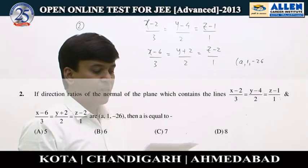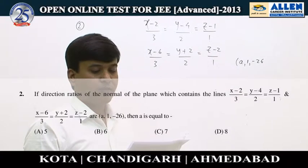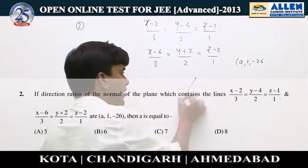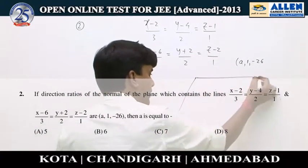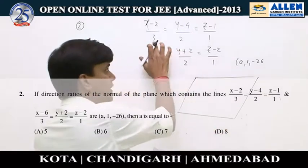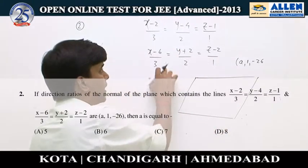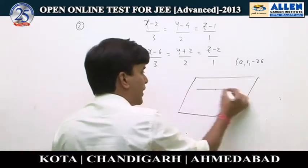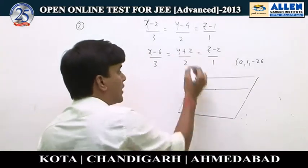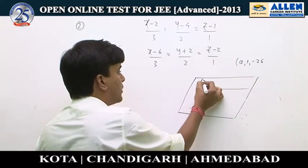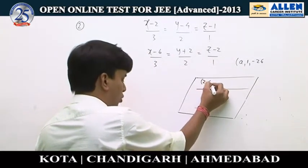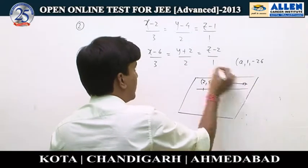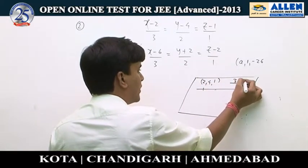We have to find out the direction ratios of the normal of the plane which contains these two lines. These two lines are parallel because their direction ratios are proportional (3:1:1). The first line passes through the point (2, 4, 1) and has direction ratio 3:1:1.